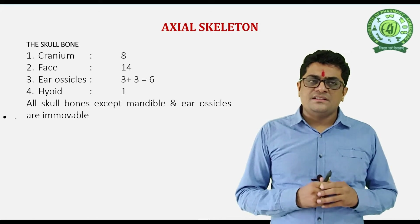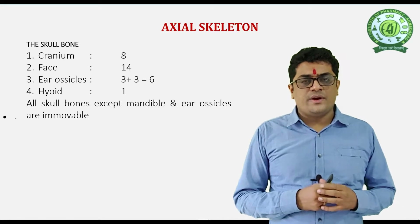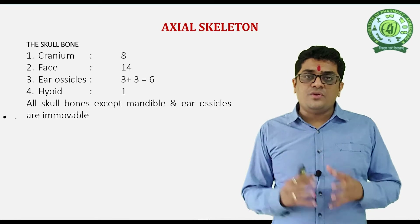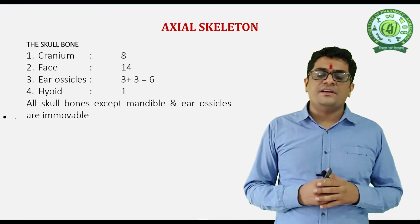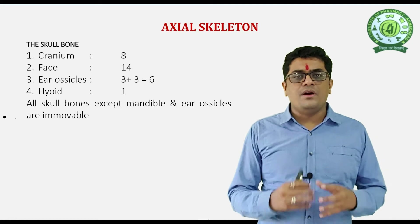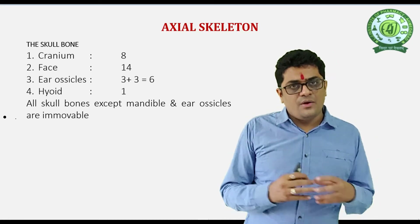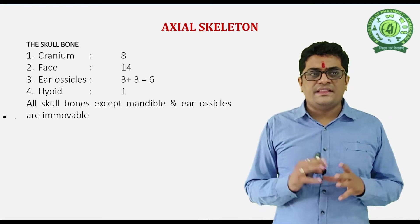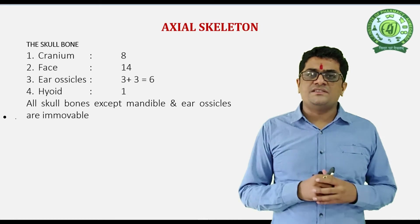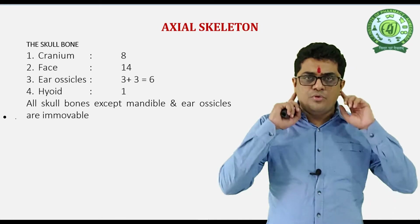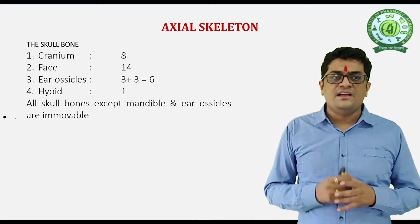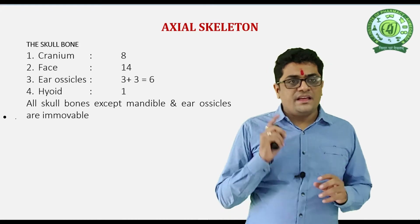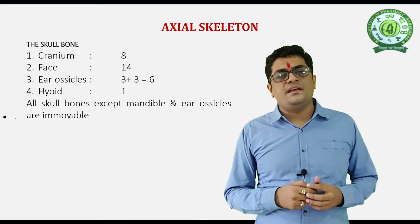In the Axial Skeleton, the skull has a total of 22 or 29 bones. If we include the ear ossicles and the hyoid bone, the number is 29. Without ear ossicles and the hyoid bone, the skull has 22 bones. The cranium has 8 bones, facial bones are 14, ear ossicles are 3 plus 3 (6 bones from both ears), and 1 hyoid bone. All skull bones are immovable except the ear ossicles and the mandible, which are movable bones.